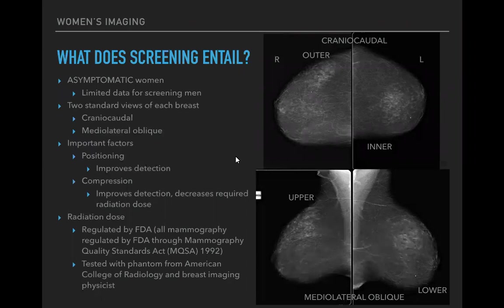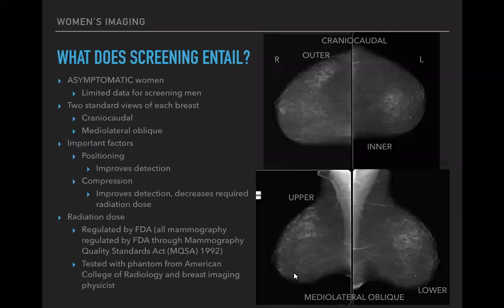For screening mammogram image display, right is on your left-hand side in radiology convention. For craniocaudal projections, the outer breast is always on top and the inner breast is below. For the mediolateral oblique projection, you can see the pectoralis muscle, upper breast, lower breast, and the nipple as a guide. The outer breast is always at the top of the screen for the craniocaudal view.